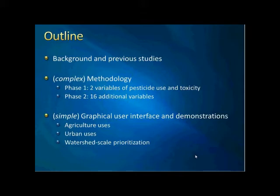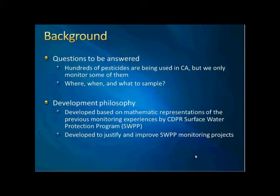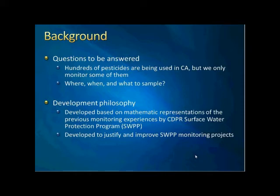I will also show some unique features of this program, including regional and seasonal-based application of prioritization, and also show the prioritization for degradates. As mentioned, the methodology could be very complex, but I want to make sure the program is very easy to use. Here are the reasons and our approaches for model development. This project is developed to answer commonly asked questions for monitoring project design. For example, we have almost 1,000 different pesticides used in California, associated with even more degradates, but only a very small number are actually currently monitored by the surface water program.